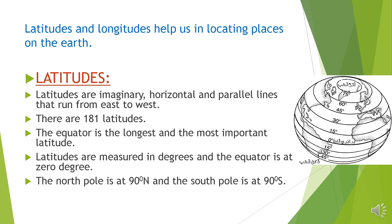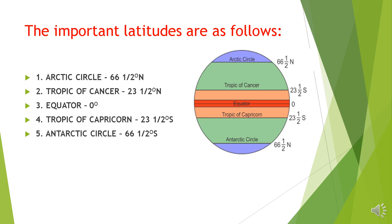Latitudes are measured in degrees and the equator is at 0 degree. The north pole is at 90 degrees north and the south pole is at 90 degrees south. Now let us study about these important latitudes: Arctic Circle 66½ degrees north, Tropic of Cancer 23½ degrees north, Equator 0 degree, Tropic of Capricorn 23½ degrees south, Antarctic Circle 66½ degrees south.